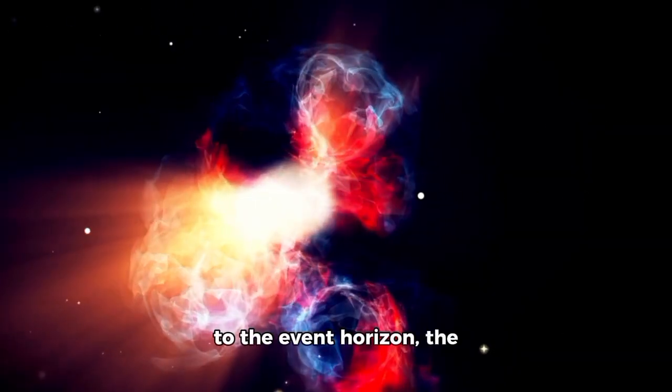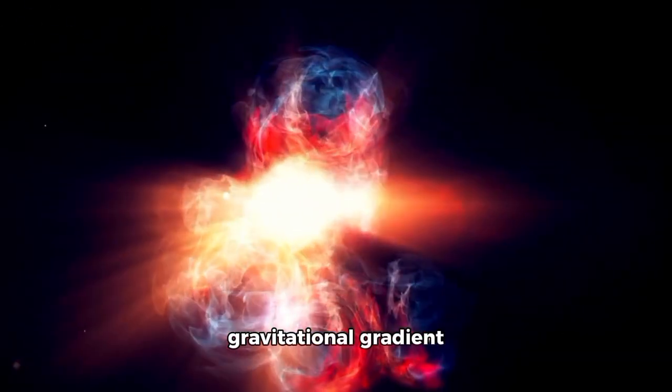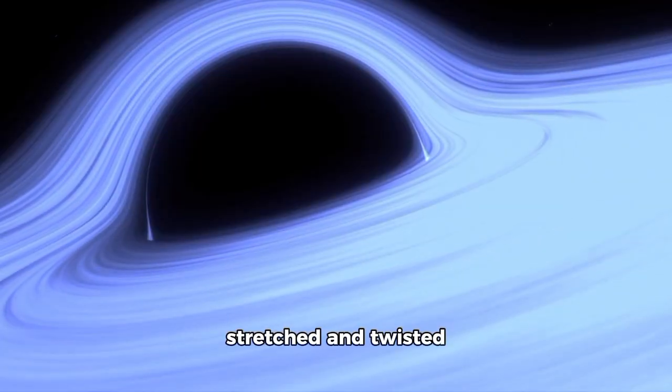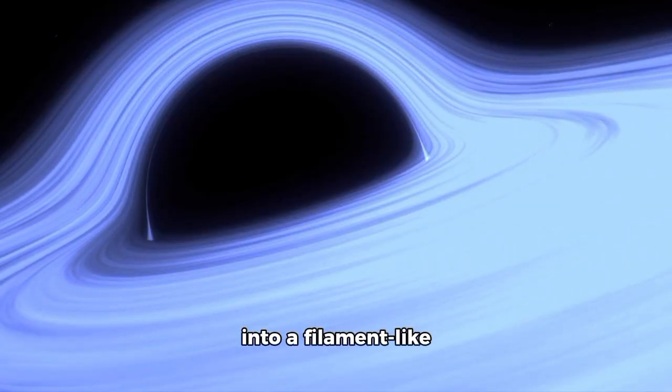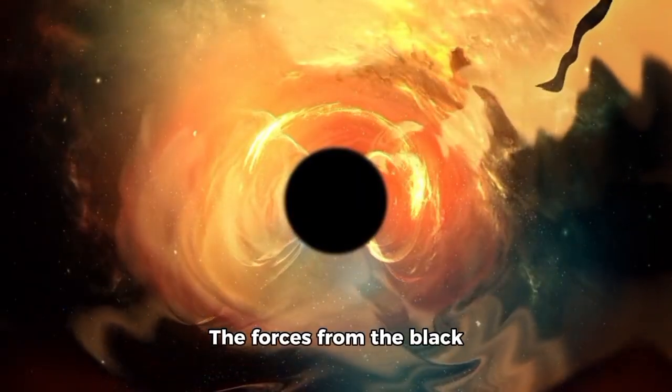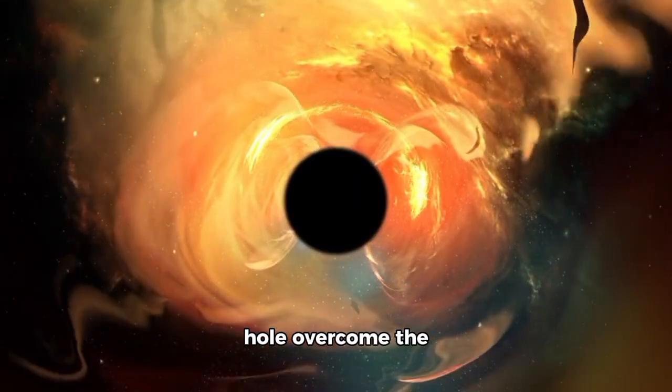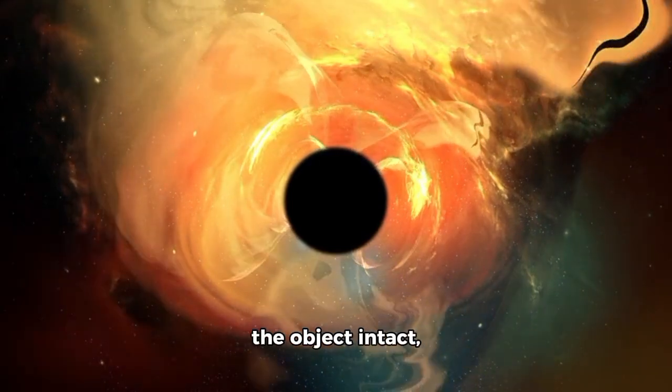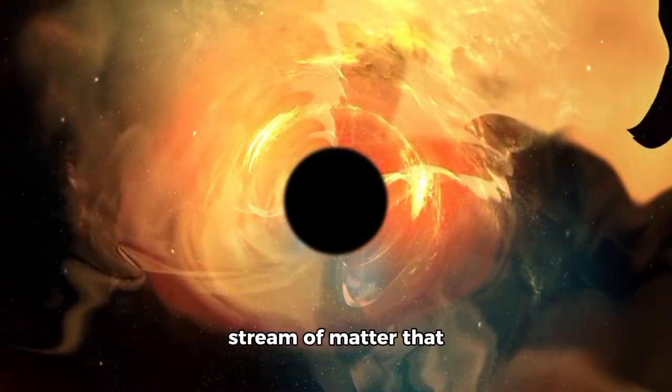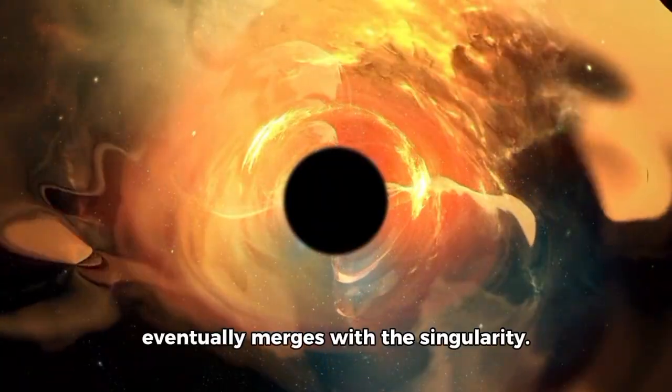As an object gets closer to the event horizon, the gravitational gradient along its length becomes so extreme that it is stretched and twisted into a filament-like shape resembling strands of spaghetti. The forces from the black hole overcome the internal bonds that hold the object intact, causing it to disintegrate into a stream of matter that eventually merges with the singularity.